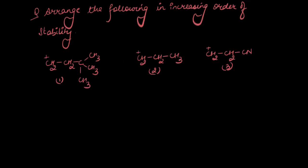Let's move on to the next question: arrange the following in increasing order of stability. Carbocation stability — carbocations are electron-deficient species, so if somebody wants to donate electron density to them, they accept it readily, while electron-withdrawing groups are unwelcome. Looking at the first case, the carbon is attached to three methyl groups, which are electron-donating groups that push electron density to this carbon, giving the whole group a plus-I effect. In the second case, the carbon directly attached to the carbocation has a methyl group, which donates electron density, but not as effectively as the first group.